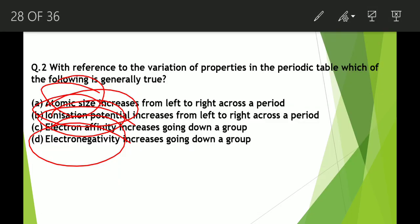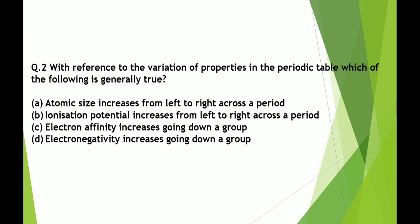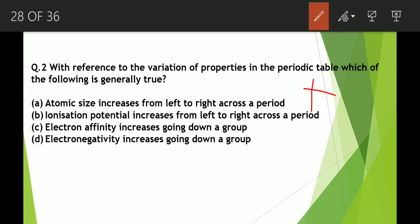When we move down a group, atomic size increases, whereas ionization potential, electron affinity, and electronegativity all decrease. Now let's evaluate the four statements. First: atomic size increases from left to right across a period — incorrect. Second: ionization potential increases from left to right across a period — correct. Third: electron affinity increases going down a group — incorrect. Fourth: electronegativity increases going down a group — incorrect. The right answer is the second statement: ionization potential increases from left to right across a period.